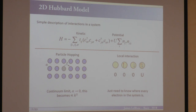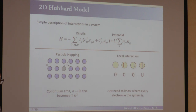However, there's a caveat: in order to write down the energies of your system, you still have the same kind of fundamental problem as in the Coulomb interaction — you still need to know where every electron in your system is, in a classical context. So it's not actually substantially simpler than the full problem.